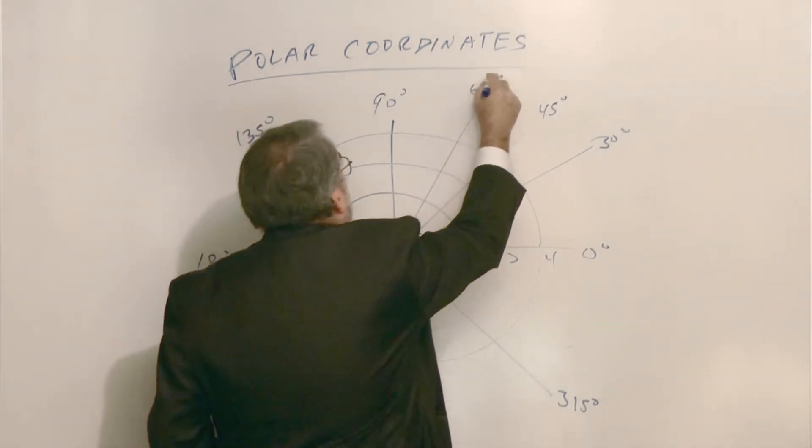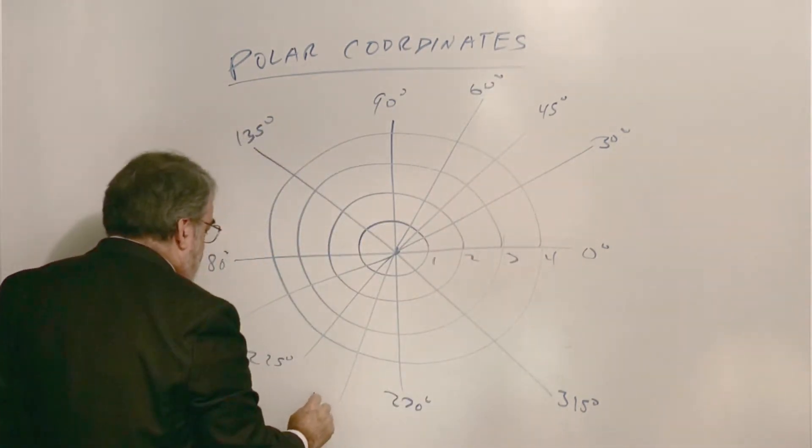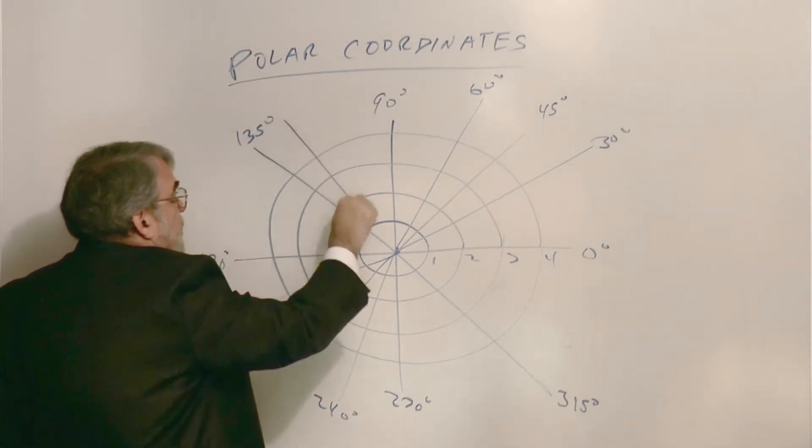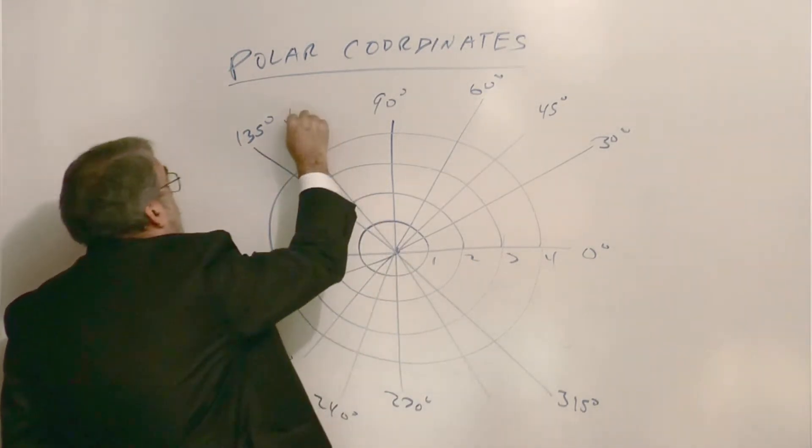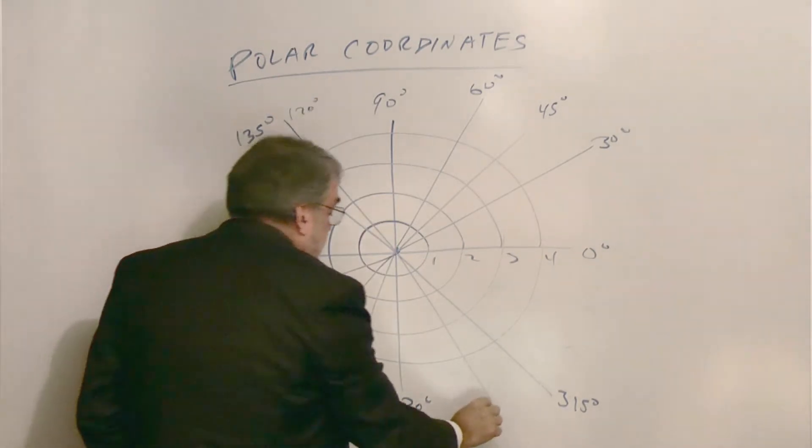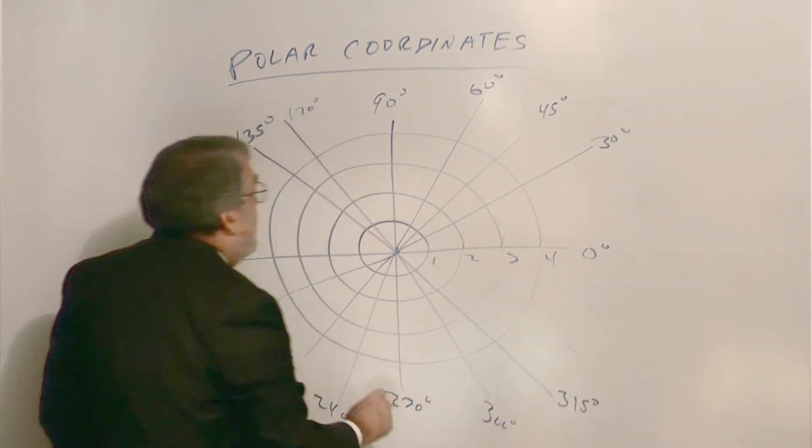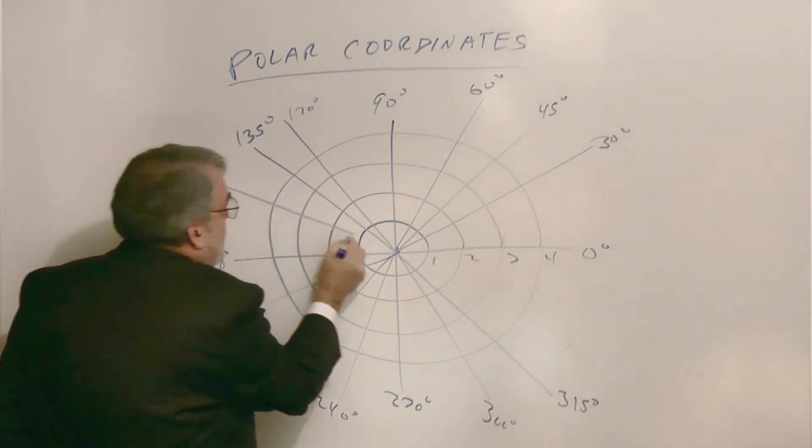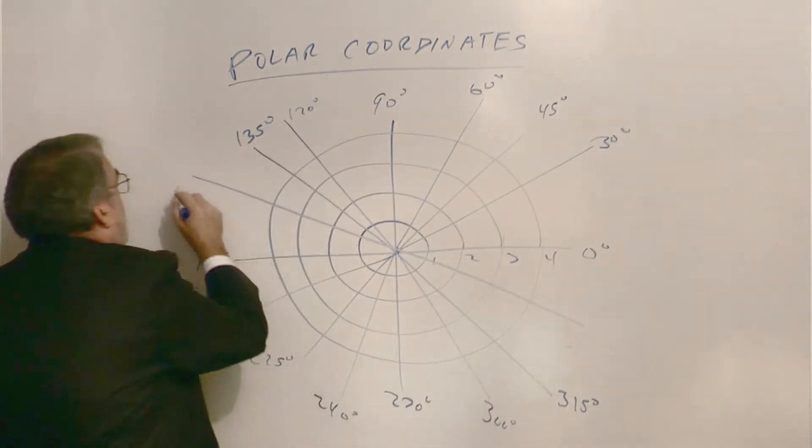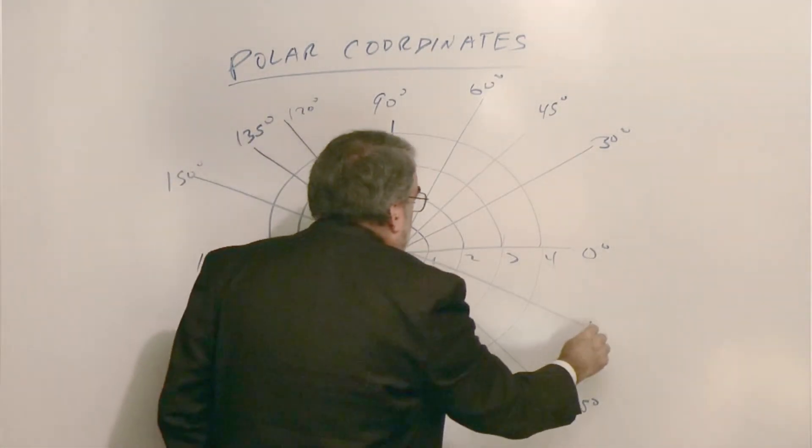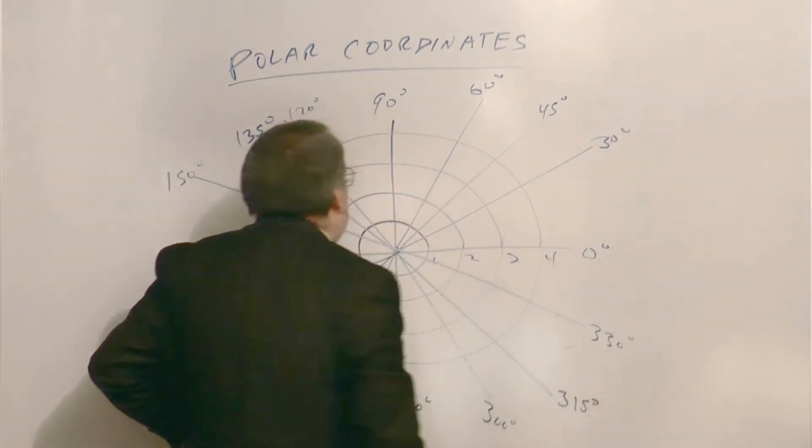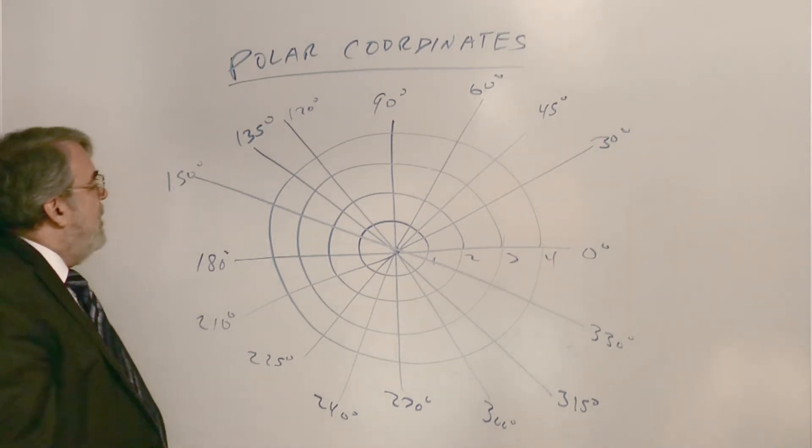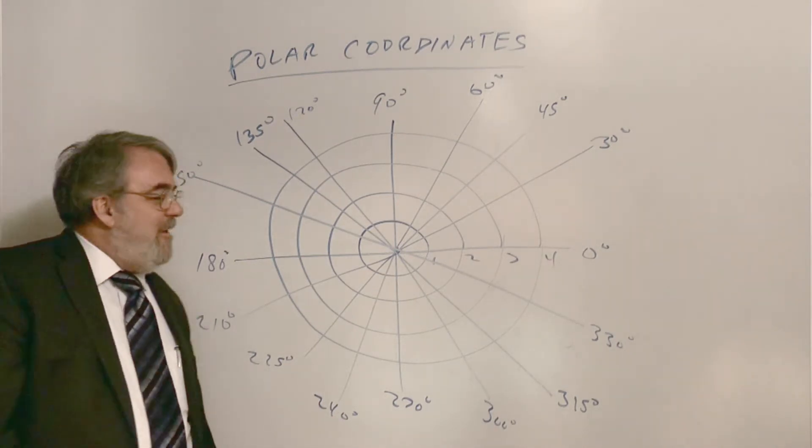So this is 210. That's 30. I think you're probably getting the hang of this, but let me just complete it. 60, 240. And let's see, two more, two more. This will be 120 and 300. And this one, it'll be 150 degrees and 330 degrees. There you go.